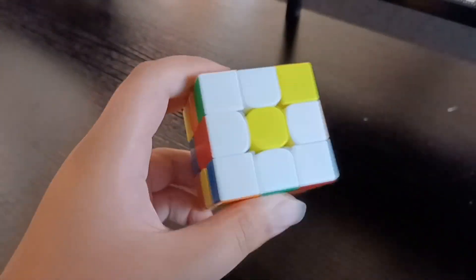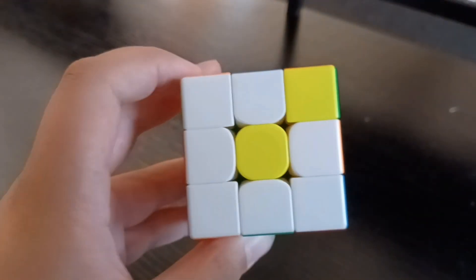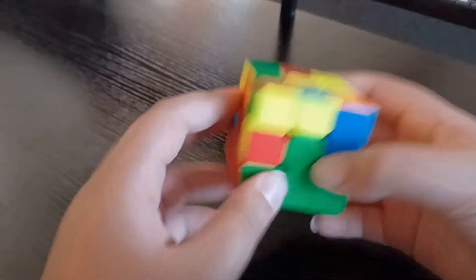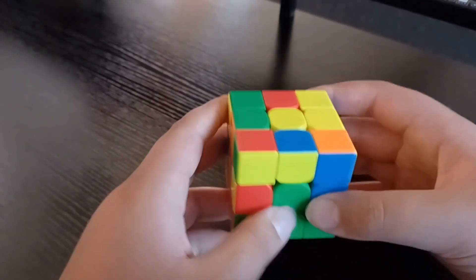In the first part of the tutorial I made a daisy and turned the daisy into a cross. Lastly I made the first layer. If you haven't watched part one of the tutorial I'll put it down in the description.